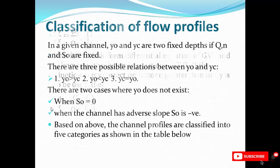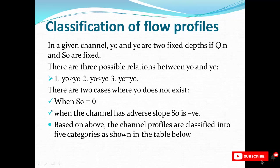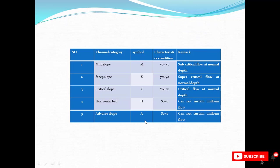For the classification of flow profiles, there are three relations between y₀ (normal depth, found using Manning's equation) and yc (critical depth): y₀ greater than yc, y₀ less than yc, or y₀ equal to yc. There are two cases where no normal depth exists: when the bed slope S₀ equals zero (horizontal), and when the channel has an adverse slope. This gives five categories of flow profiles: mild slope (y₀ > yc), steep slope (yc > y₀), critical (y₀ = yc), horizontal (S₀ = 0), and adverse (S₀ < 0).